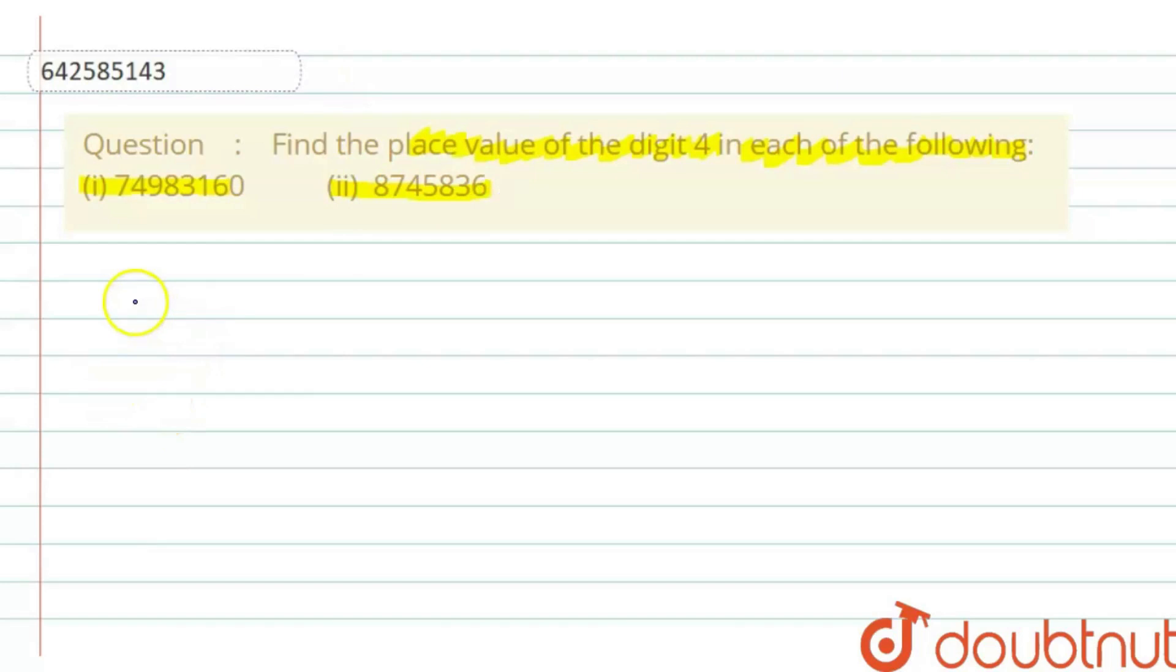So the first part of the question is 749831160. We have to find the place value of this digit 4. So for this what we will do is that we will write the place value.